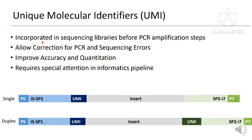UMIs are incorporated into sequencing libraries before the PCR amplification step. By tagging your sequence with UMIs before PCR, you can correct PCR and sequencing errors, which improves accuracy and quantification. However, we need to pay special attention in the bioinformatics pipeline.